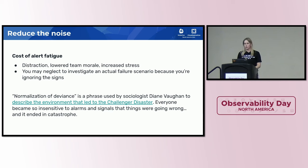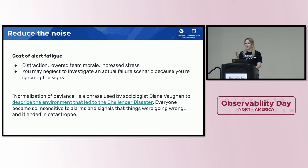There's a phrase called normalization of deviance that was used to describe the Challenger disaster. People became so insensitive to alarms and notes that things were going wrong that by the end it ended up in catastrophe. There were points along the way that in hindsight were obvious, but when you have all the ones that don't matter, it's like the boy who cried wolf — when there's actually a problem, no one's listening anymore.